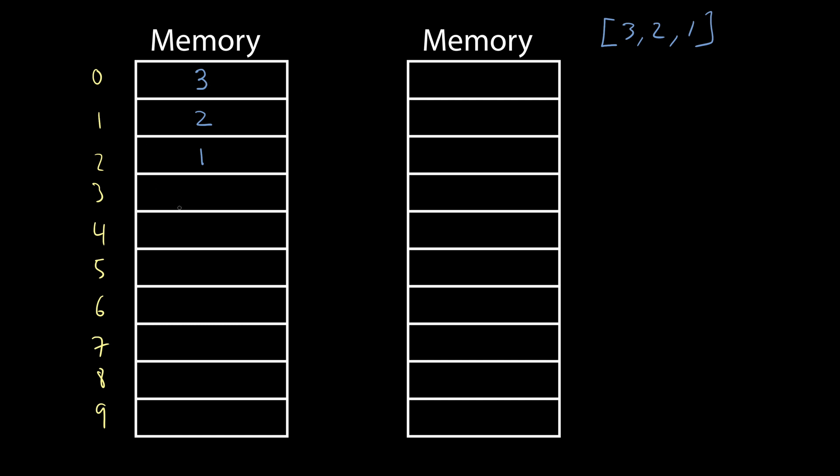And that's just how it's laid out in memory. So when we think of an array, we could think of this array as being A. And then A[0], we would get three. A[1], we would get two. And then A[2], we would get the value one.